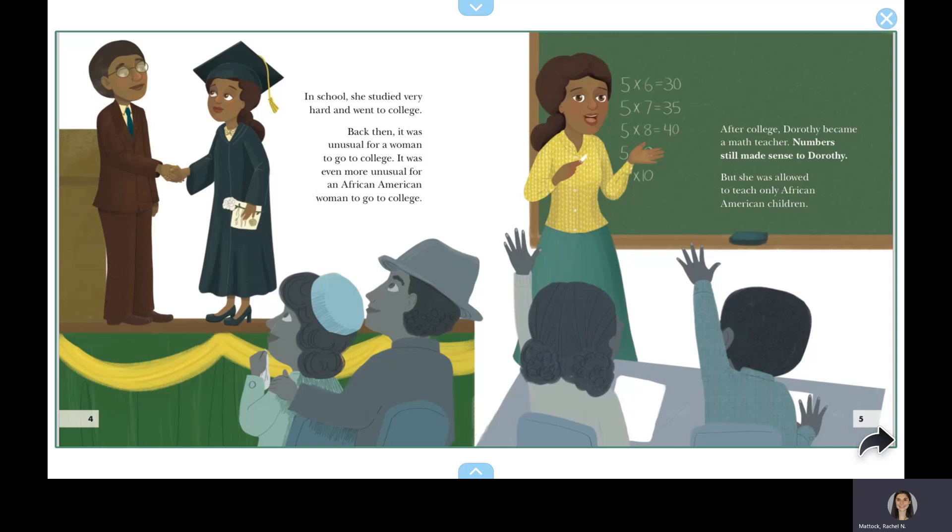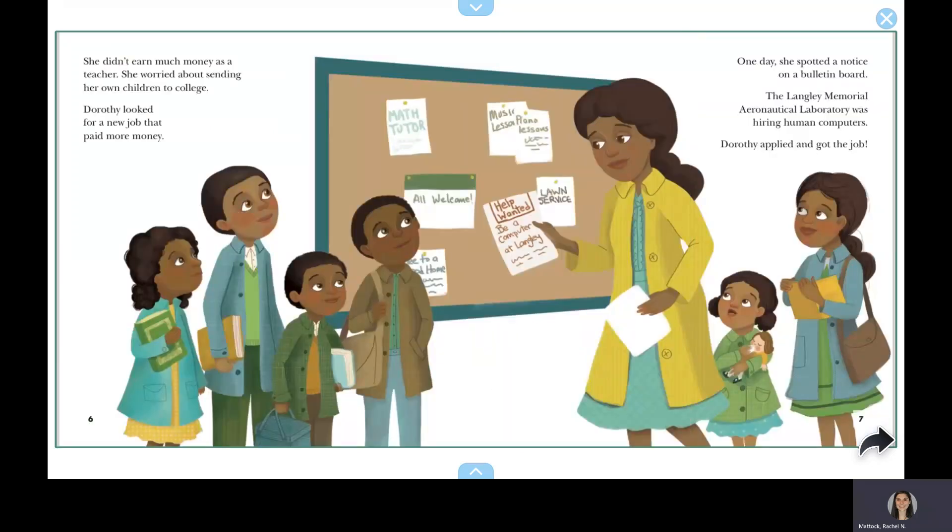After college, Dorothy became a math teacher. Numbers still made sense to Dorothy, but she was allowed to teach only African American children. She didn't earn much money as a teacher. She worried about sending her own children to college.